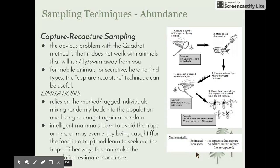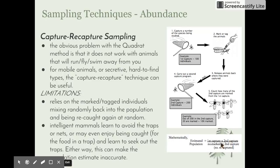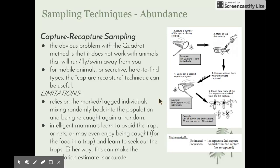We use the equation: estimated population = (first capture × second capture) ÷ number marked in second capture. In the example, that is 100 × 200 ÷ 20, giving an estimated population of about 1000. Some limitations of this technique are that it relies on marked individuals mixing randomly back into the population and being re-caught at random. Intelligent mammals may learn to avoid traps or even seek them out for food, making population estimates inaccurate.